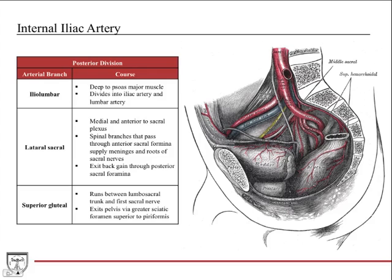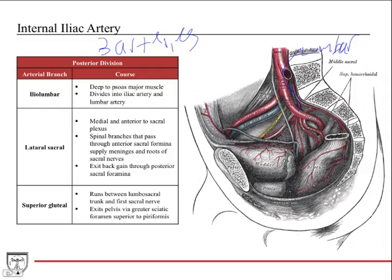We'll start with the posterior division, since there are only three arteries in it. The first one is the iliolumbar. It's the one artery not really shown well on this diagram, so I'll draw it in. It comes off the posterior division and actually travels superiorly — it doesn't even really go into the pelvis. It comes back up superiorly and gives off a lumbar branch, which helps supply the lumbar vertebrae, and then an iliac branch, which supplies structures in the iliac bone region. It travels just deep to the psoas major muscle.